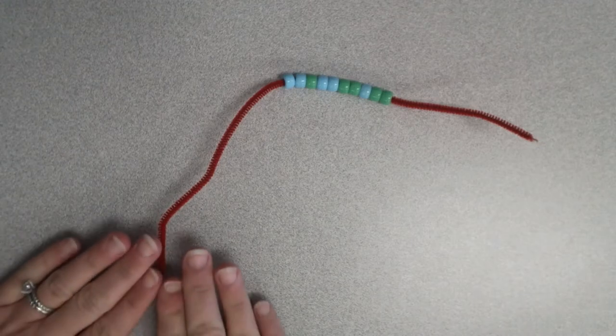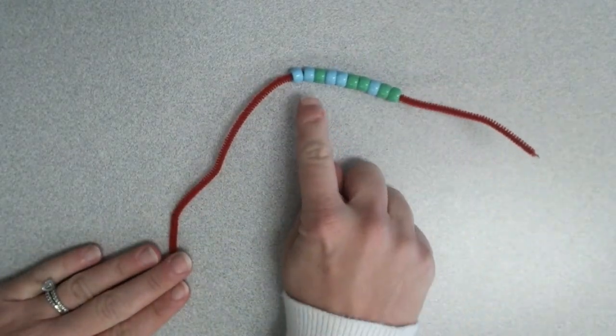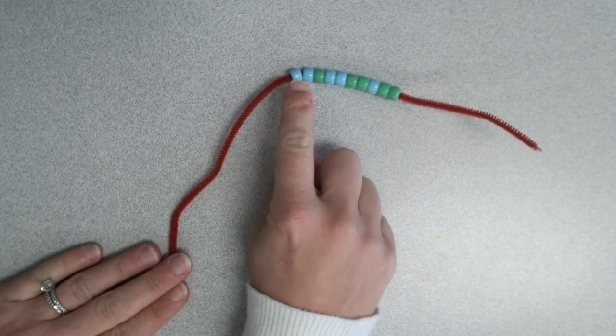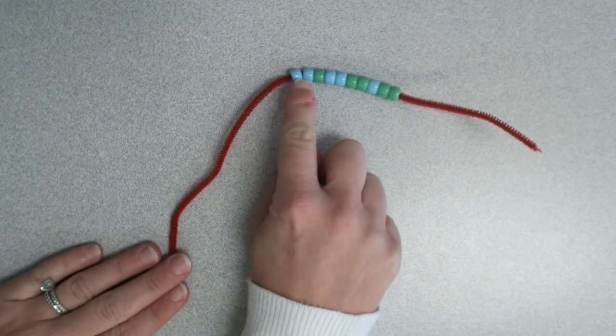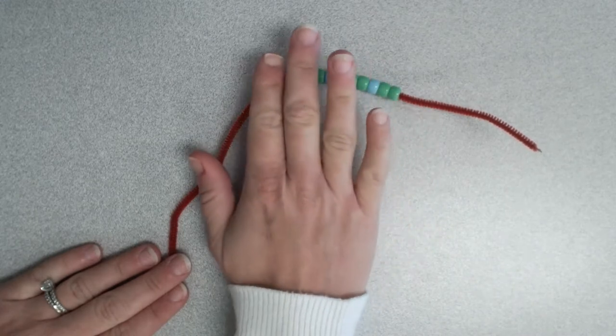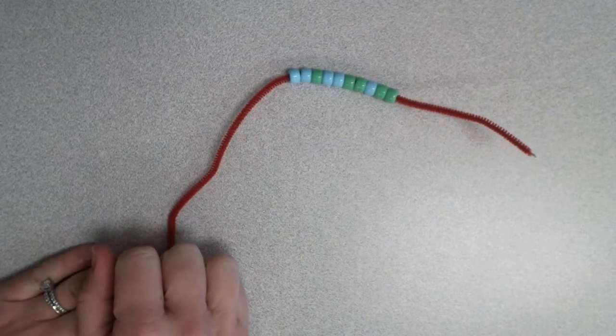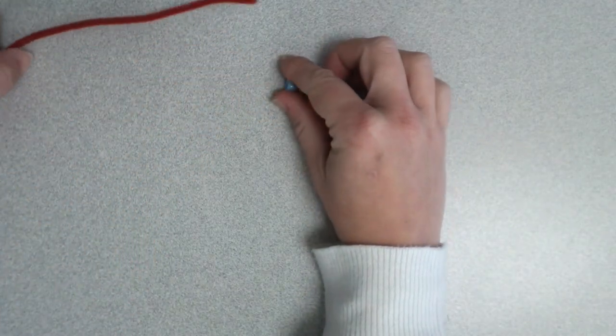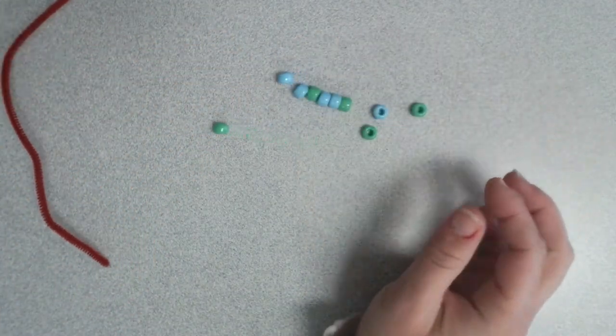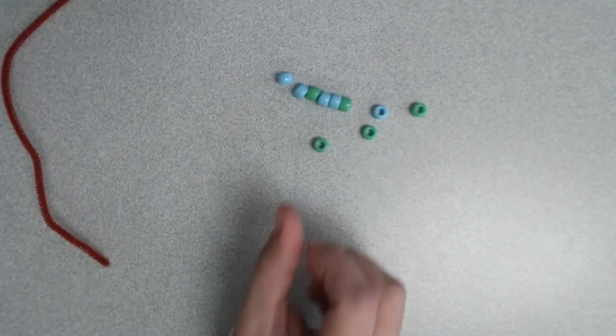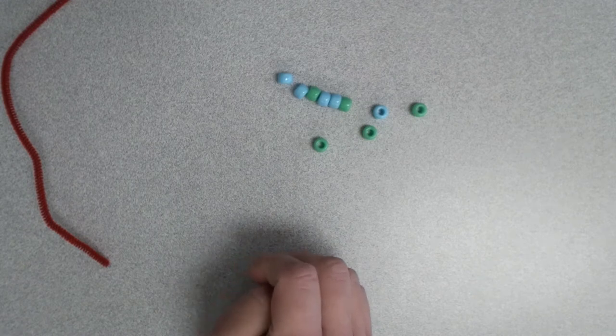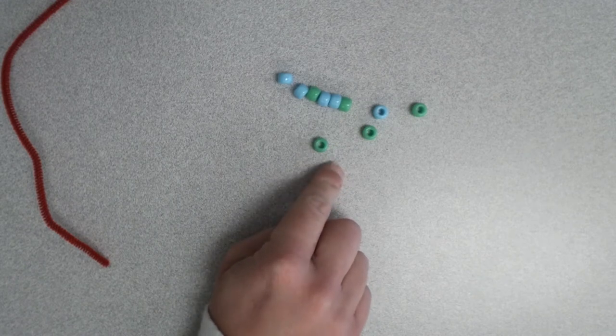Alright kiddos, you should have your pipe cleaner along with ten beads. You're gonna notice that five of them are one color and five of them are another color. My beads are blue and green. I have five blue beads, five green beads. The first thing I'd like you to do, very carefully, take your beads off of your pipe cleaner. Watch out for the rolly ones. We don't want them to fall on the floor where our little brother and sister or our pets could get a hold of them. Remember these are for school, not for eating.